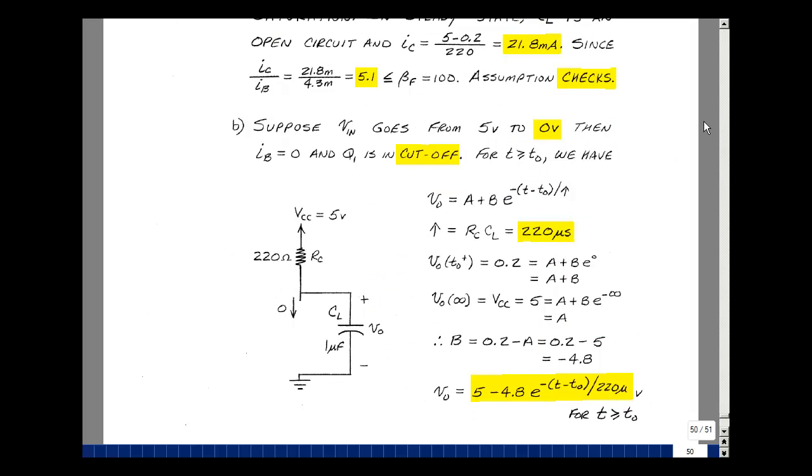Suppose at some time T0 in the future, we change the input from 5 volts to 0 volts. That's going to cut off the transistor. Our model would just be an open circuit. We'd have our resistor and then our capacitor. There was an initial condition of 0.2 volts, and now our equation for the capacitor would be A plus B times E to the minus quantity T minus T0 over tau. The 220 times the 1 microfarad is 220 microseconds. V of T0 plus is 0.2 volts, so A plus B is 0.2. As T approaches infinity, the current will go to 0, so we just have 5 volts. A is 5, then B is minus 4.8.